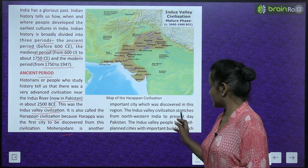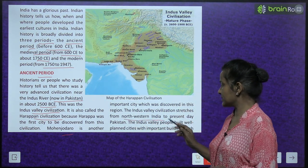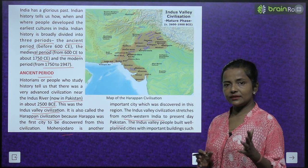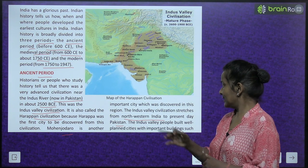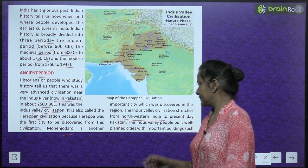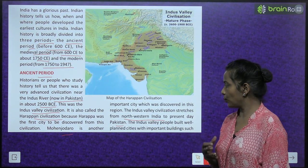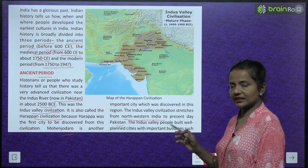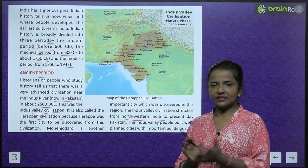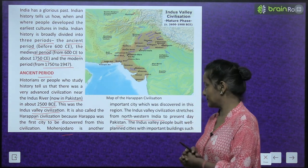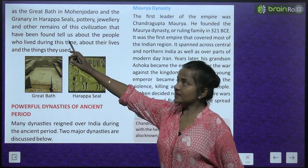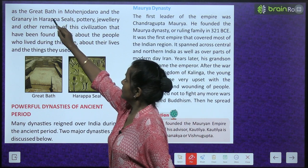The Indus Valley Civilization stretches from North Western India to present-day Pakistan. The Indus Valley people built well-planned cities with important buildings — such as the Great Bath in Mohenjo-daro. They built very well-planned cities with important buildings.